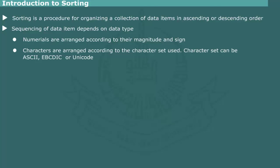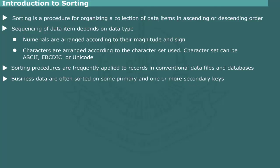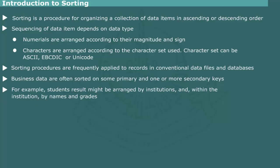UNICODE is useful for handling extended character sets in languages like Arabic, Urdu, and Chinese. Sorting is frequently applied to records in conventional files and databases. In a database, each record consists of several data fields, and a record is uniquely identified by a key which may be composed of one or more fields. Records are normally sorted on a primary key. Sometimes we need to sort on a secondary key as well. For example, entries in a result sheet may be arranged by institutions and within institutions by grades. The associated data fields are referred to as sort keys.